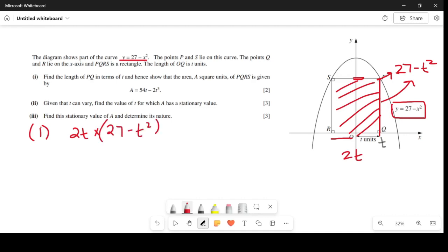Part 2: Given that t can vary, find the value of t for which A has a stationary value. Stationary value means we will have to derive this function and equate it to 0.